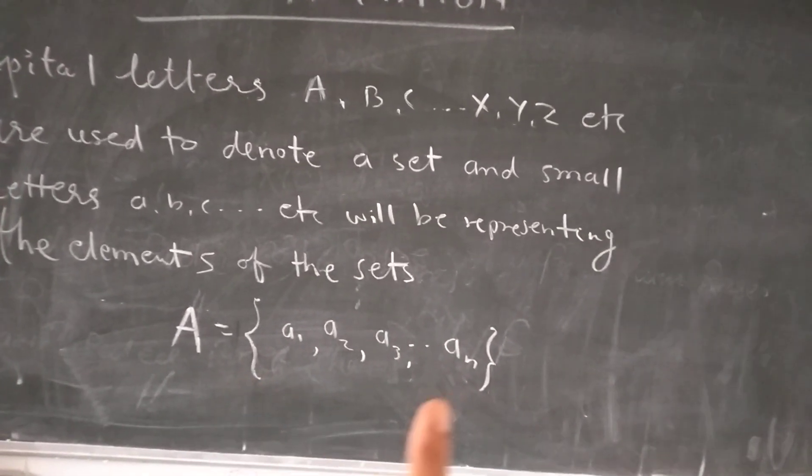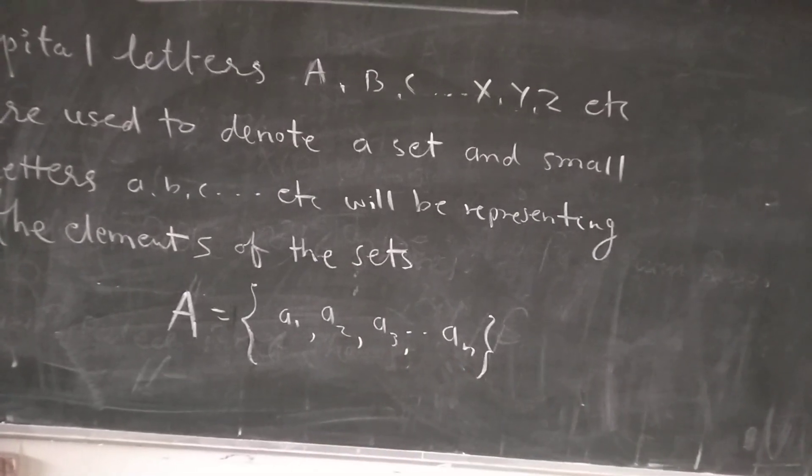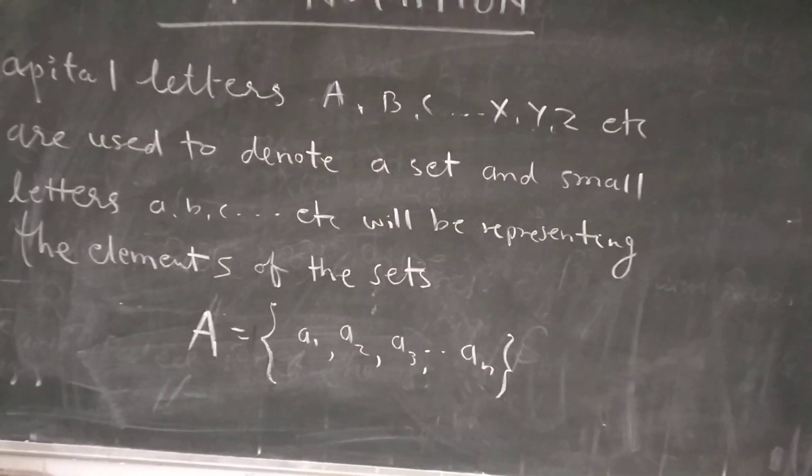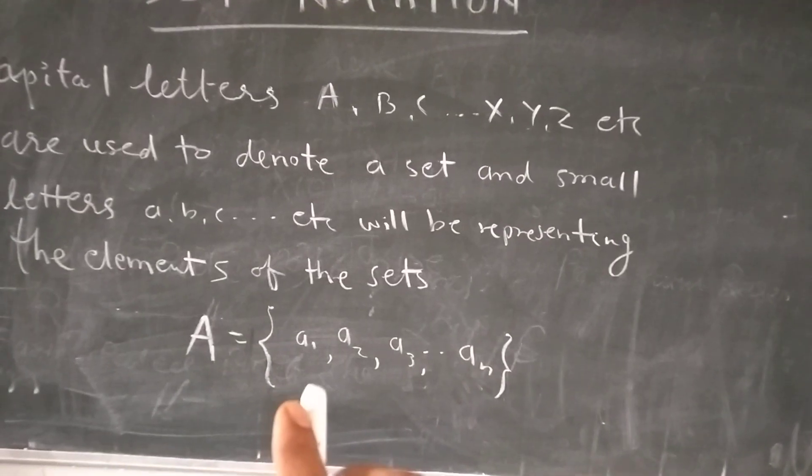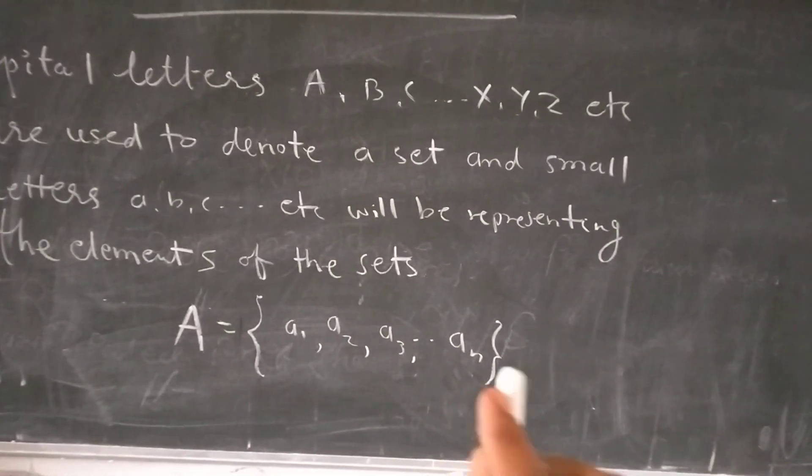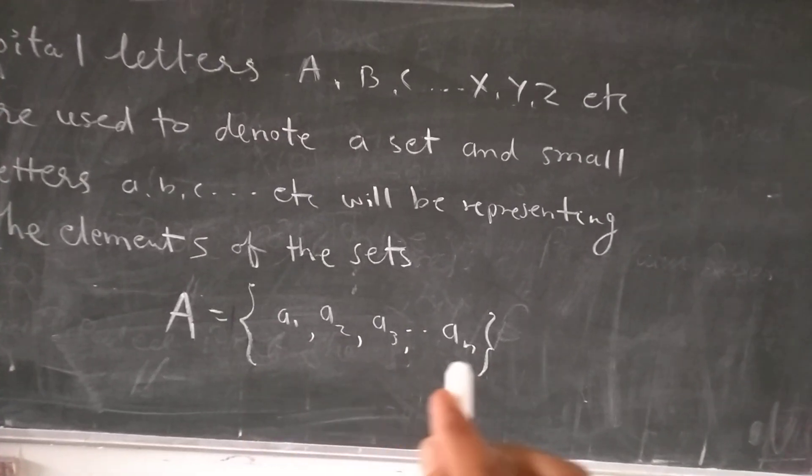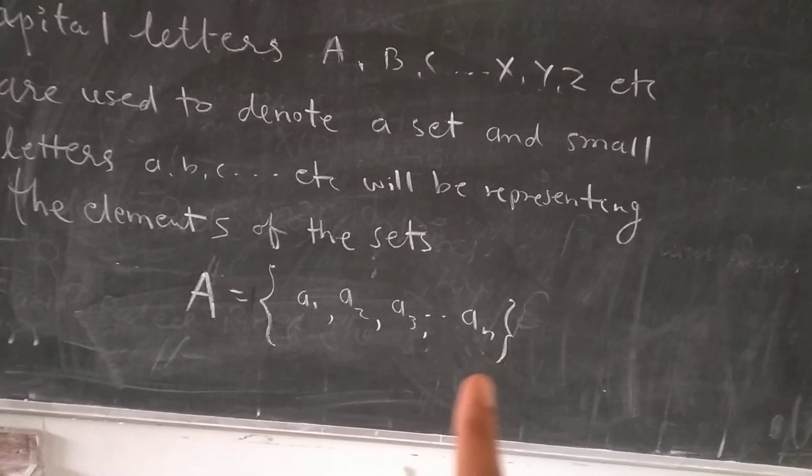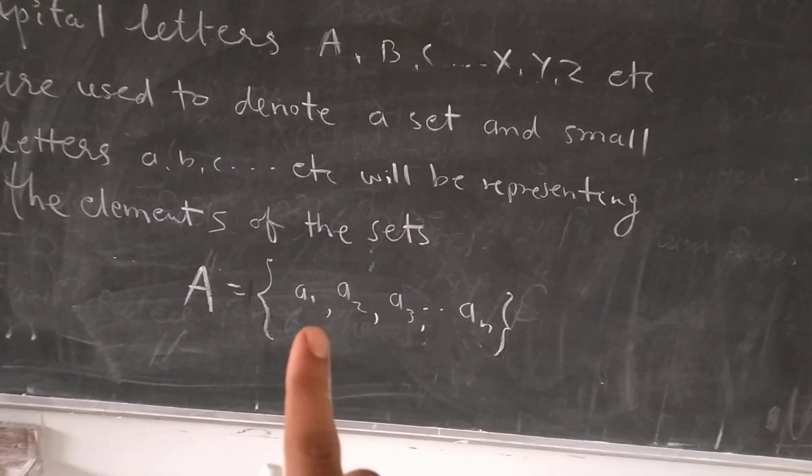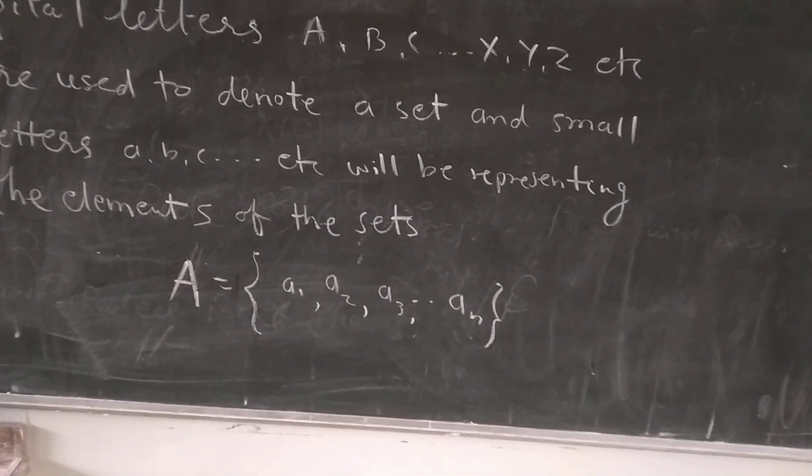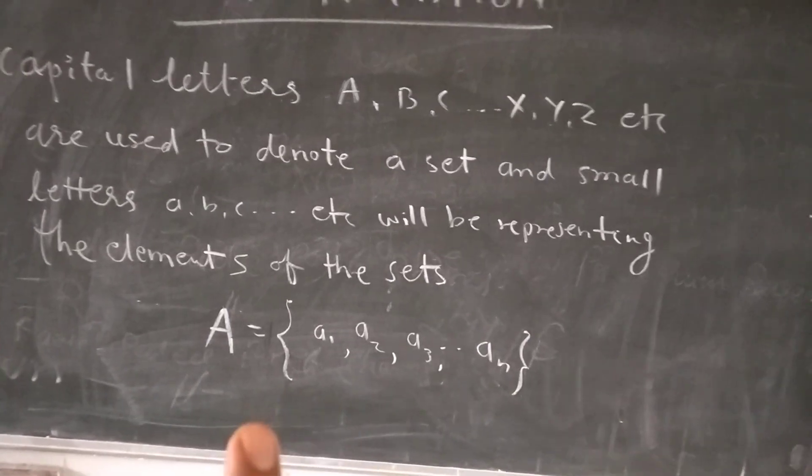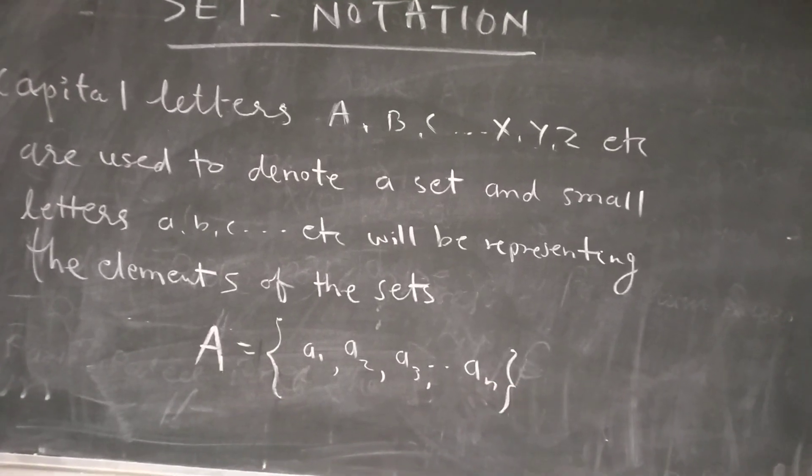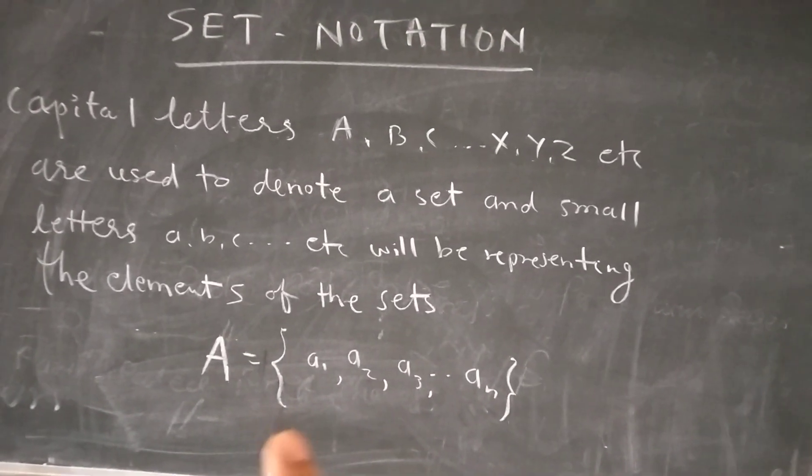In Hindi medium, you will say it is called Sarpakar Kostak. All these elements are in this set A. We will separate these elements with comma. Now we will see that it is clear that we have to give the set capital alphabet, English alphabet, capital letter, and curly bracket. We have to write the elements with comma.